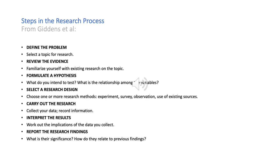These are the steps in the research process. First, we define the problem — select a topic for research. Then we review the evidence to see what other people have done. Then we think about what to test — what is the relationship between which variables? Then we select a research design. Then we carry out the research, analyze the data and interpret the results. Finally, we write up the results and present conclusions about what we found and what it tells us about the relationships between the different variables we sought to investigate.